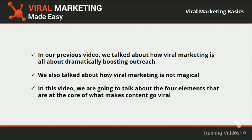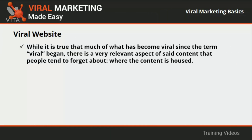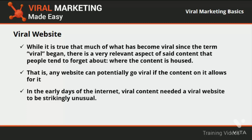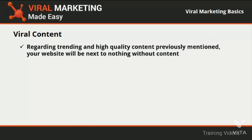In this video we are going to talk about the four elements at the core of what makes content go viral — basically what the messengers, the message, and the environment need to do to send a campaign through the roof. The first element is a viral website. While it is true that any website can potentially go viral if the content on it allows for it, when this happens it is actually a matter of luck. If you want something to go viral, you need to add viral levers to it. Nowadays a viral website just needs to be responsive, be search engine friendly, and host trending high-quality content.